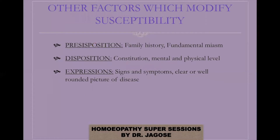Other factors which may modify susceptibility. The first is predisposition of the patient. The predisposition is seen from the family history and is supported by the past history of the patient. By perceiving the family history supported by the past history, we arrive at the conclusion of the fundamental miasm. Each miasm will have a different type of susceptibility — for example, if the fundamental miasm is psora, the susceptibility will be high; if it is sycosis, it will be low.